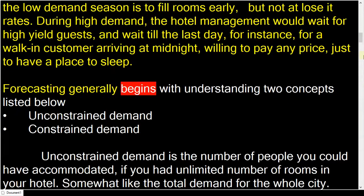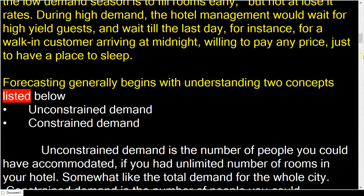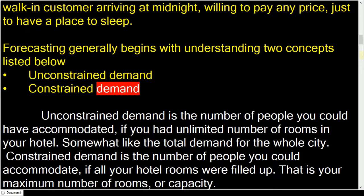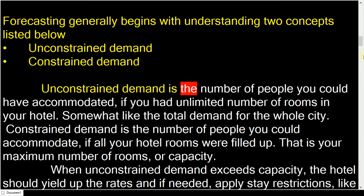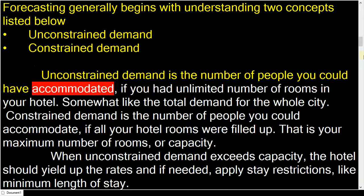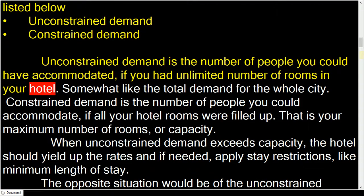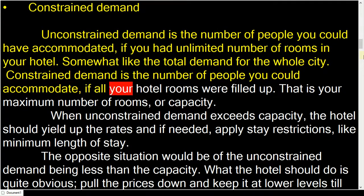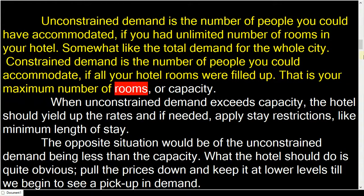Forecasting generally begins with understanding two concepts: Unconstrained Demand and Constrained Demand. Unconstrained Demand is the number of people you could have accommodated if you had an unlimited number of rooms in your hotel — somewhat like the total demand for the whole city. Constrained Demand is the number of people you could accommodate if all your hotel rooms were filled up — that is your maximum number of rooms, or capacity.